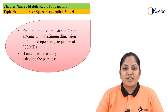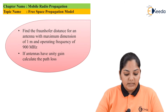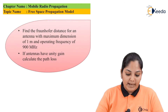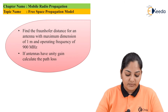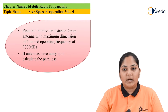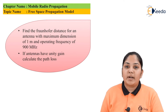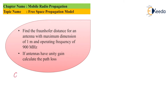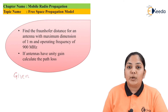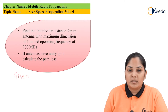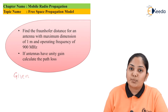Let us now move on to the numerical problem. The question is: find the Fraunhofer distance for an antenna with a maximum dimension of 1 meter and an operating frequency of 900 MHz. If the antennas have unit gain, calculate the path loss. The given information: operating frequency f = 900 MHz, and antenna dimension D = 1 meter.